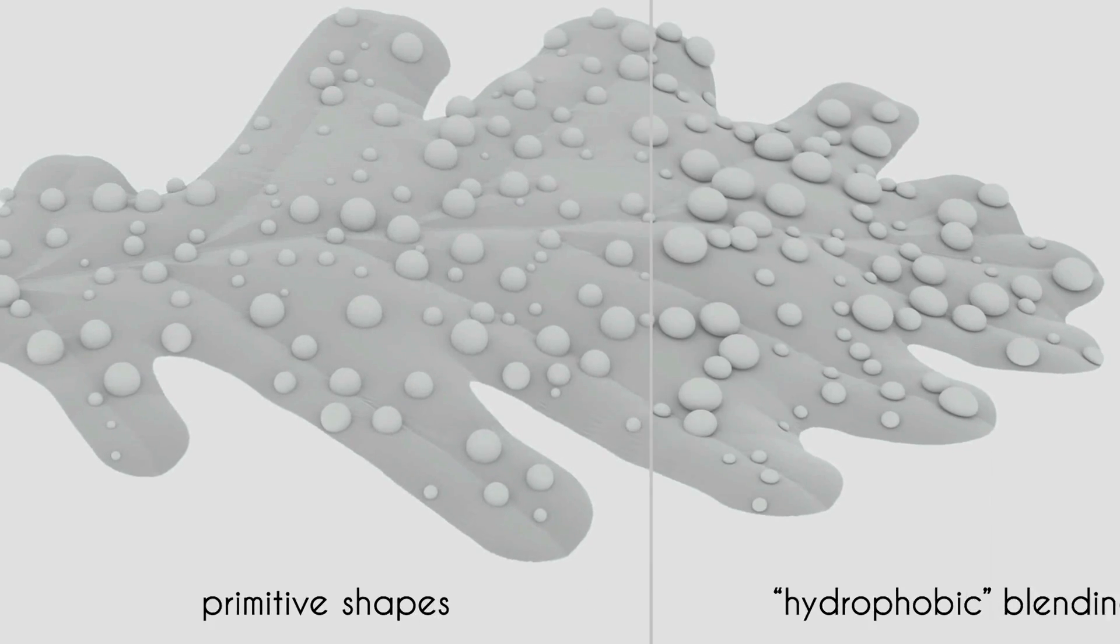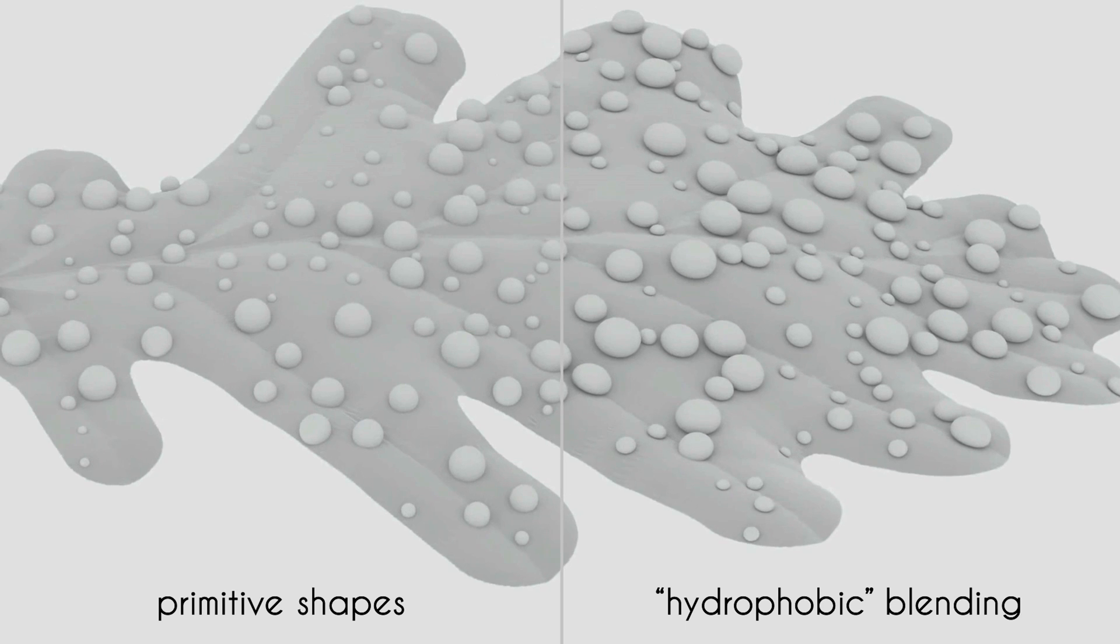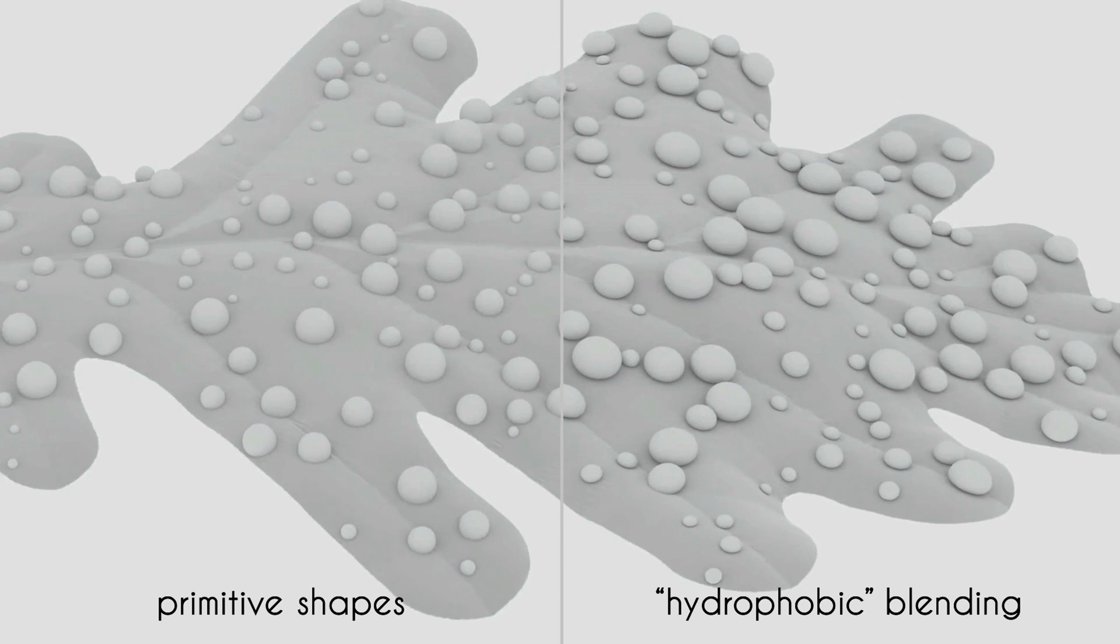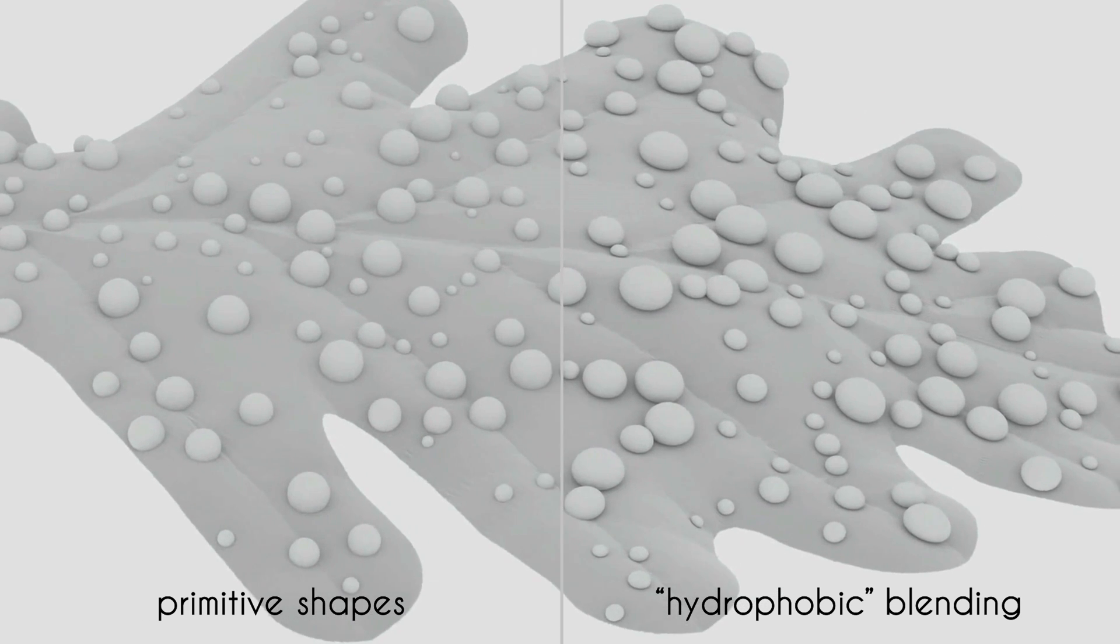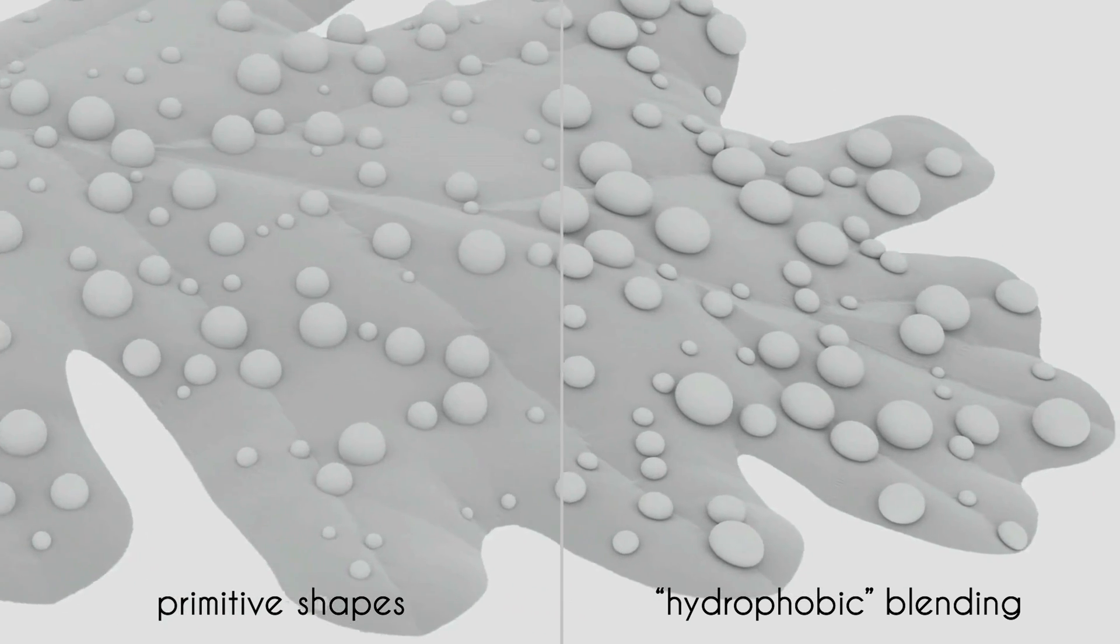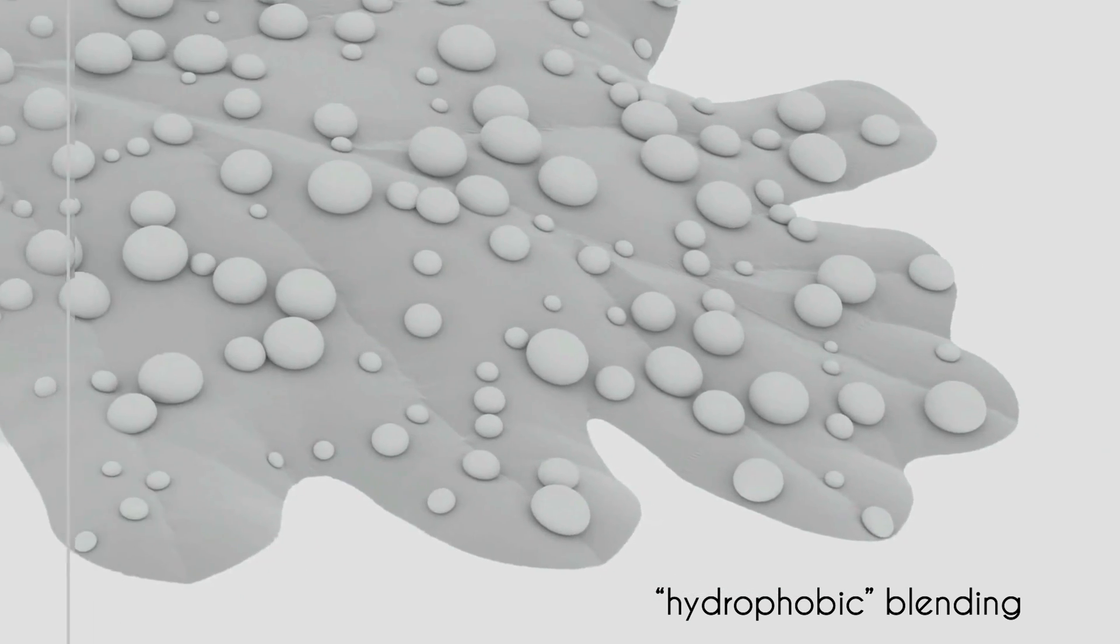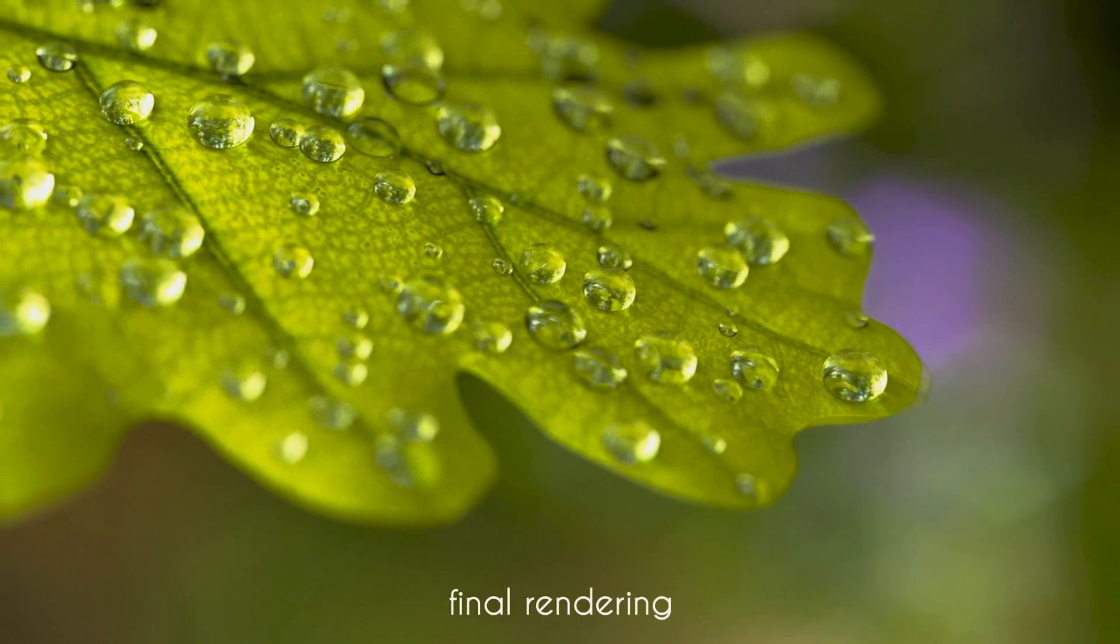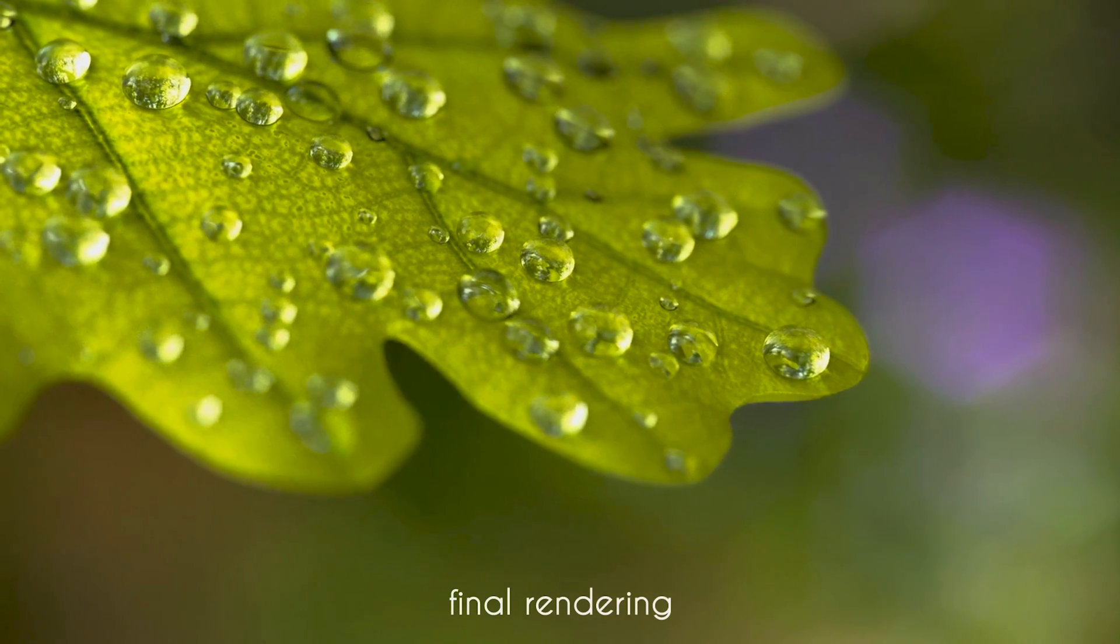In this example, we model some water droplets on the previously modeled leaf. First, a number of sphere primitives are distributed on the surface. Next, we sketch the deformation to mimic surface tension. Here, we show the final rendering of the leaf after a rain shower.